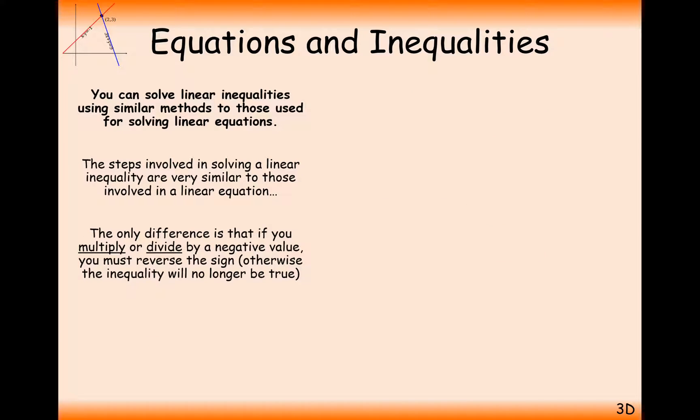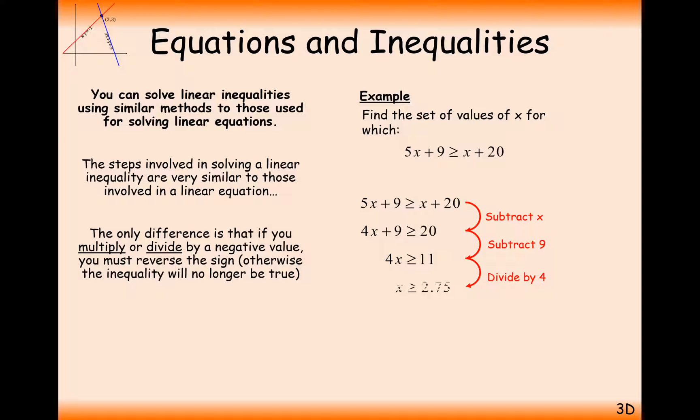Let's have a go at some more of these examples. In this case here, we've got 5x plus 9 is greater than or equal to x plus 20. I think the first thing we'll do here is we'll take away x on the other side, take away 9, and divide through by 4, and we get x is bigger than or equal to 2.75. Now, here we didn't need to use those negative rules, and you rarely do, but it's just in case you need to.